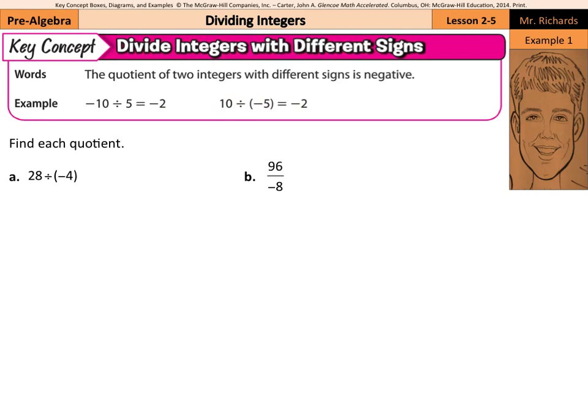The first key concept: dividing integers with different signs. The quotient of two integers with different signs is negative. So a negative divided by a positive results in a negative number, and a positive divided by a negative is also negative, just like with multiplication. For example, 28 divided by negative 4 — positive divided by negative — just divide: 28 divided by 4 is 7, so the answer is negative 7. And 96 divided by negative 8: 96 divided by 8 is 12, and positive divided by negative is negative, so negative 12.